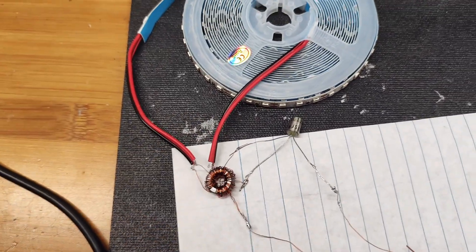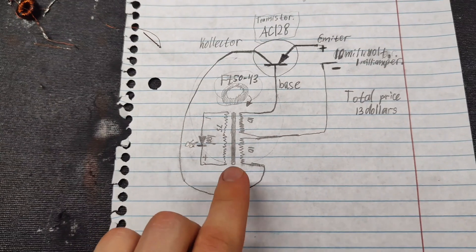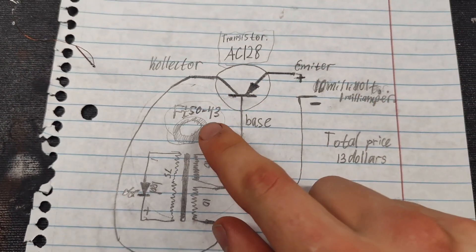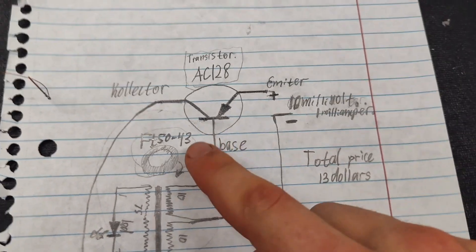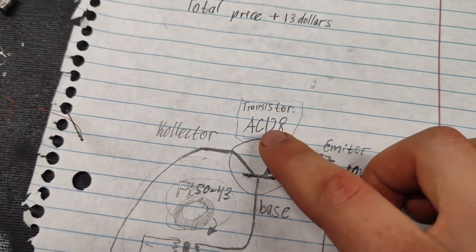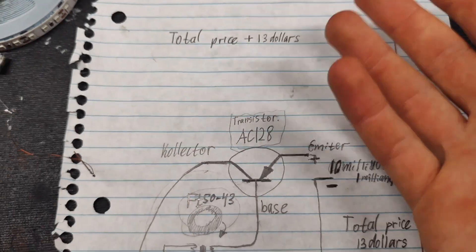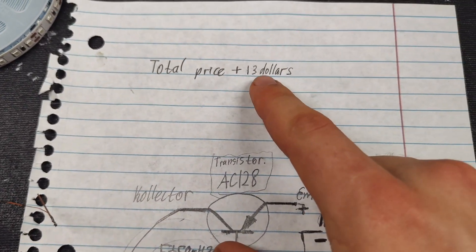This is the circuit diagram for the energy converter. I use an IRF5043 and a 2N5128 transistor. The total price is about $13.